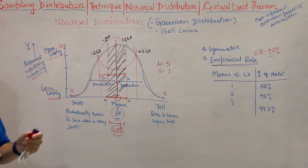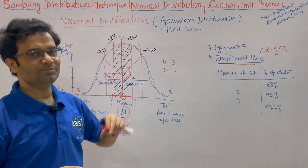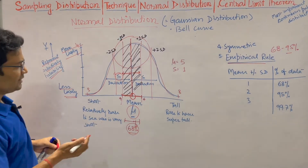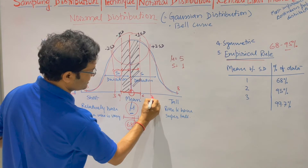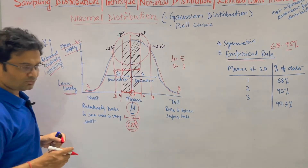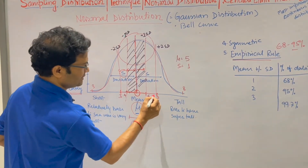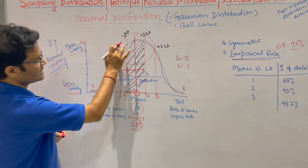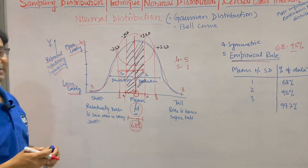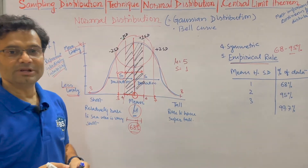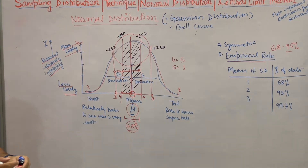Without doing any complex calculation, we can calculate using the empirical rule. If mean is 5 and SD is 1, then 5 plus 2 is 7 and 5 minus 2 is 3. The population between height 3 and 7 is 2 standard deviations, which is 95 percent. This is why the empirical rule is very useful when your data is normally distributed.